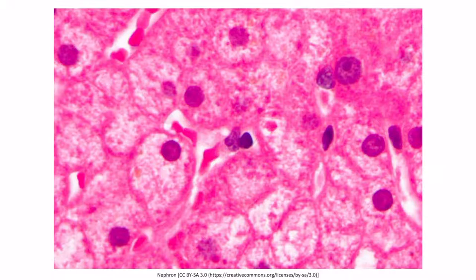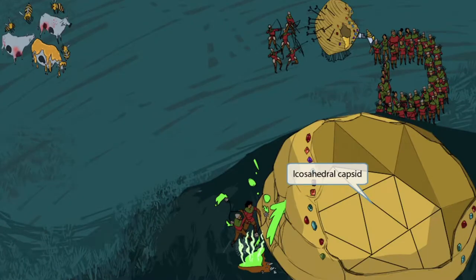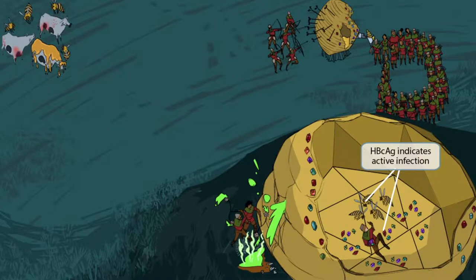This is an H&E stain of hepatitis showing ground glass hepatocytes — many little eosinophilic particles in the hepatocytes referred to as ground glass. In the center, the core of the hive has an icosahedral shape, representing how hepatitis B has an icosahedral capsid. The beehive core also has gems attached to it. We use gems to represent antigens, and the fact that these antigens are on the core indicate they represent core antigens. When present in the patient's serum, core antigens indicate an active infection.